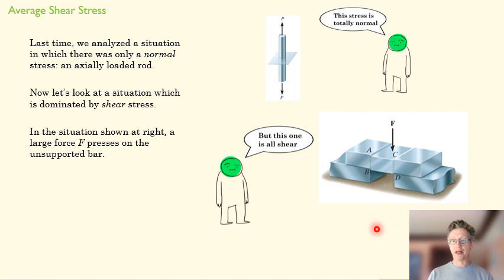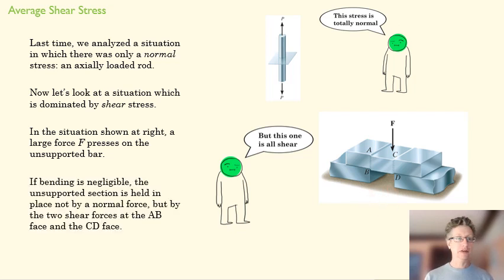We can see in this situation there's a large force F, but it's unsupported down here, and so there's nothing down here to hold this bar in place. You need some other kind of force that's going to hold that bar in place, and that's a shear force. So you're getting a shear force in planes AB here and plane AC that are resisting that force F.